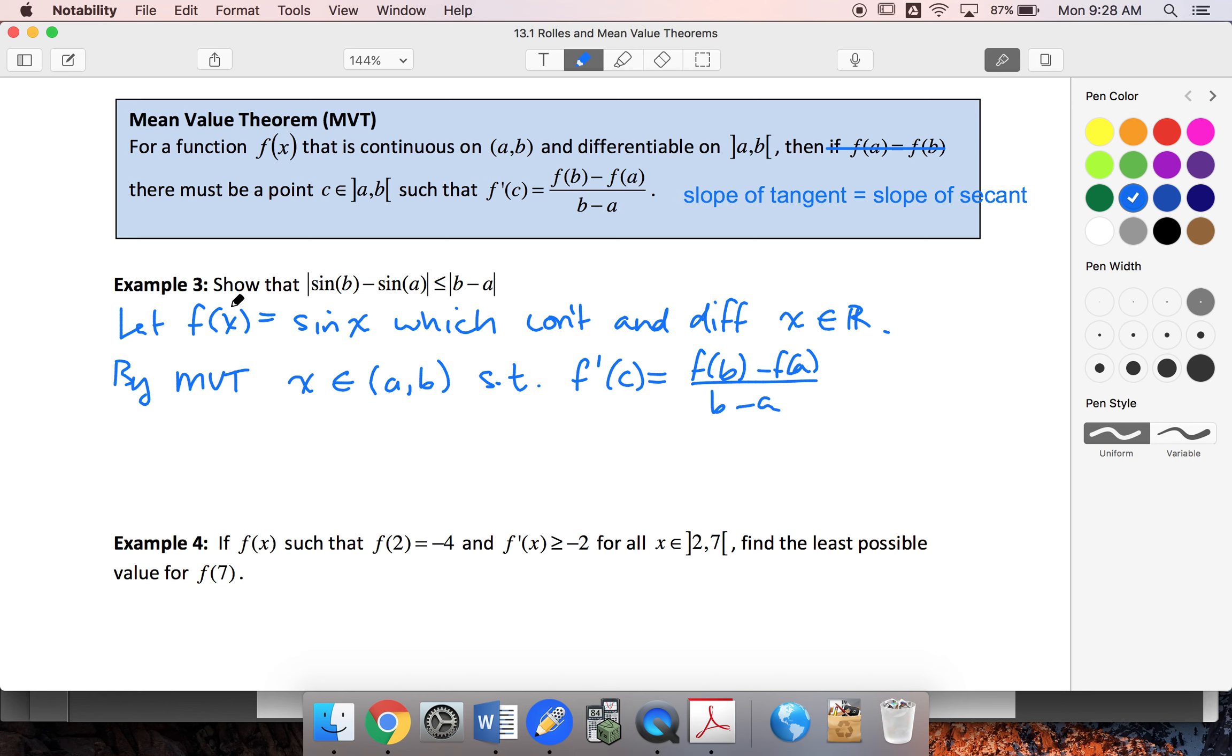Well, f'(c) - the derivative of sine is cosine. So we've got cos(c) = [sin(b) - sin(a)] / (b - a).